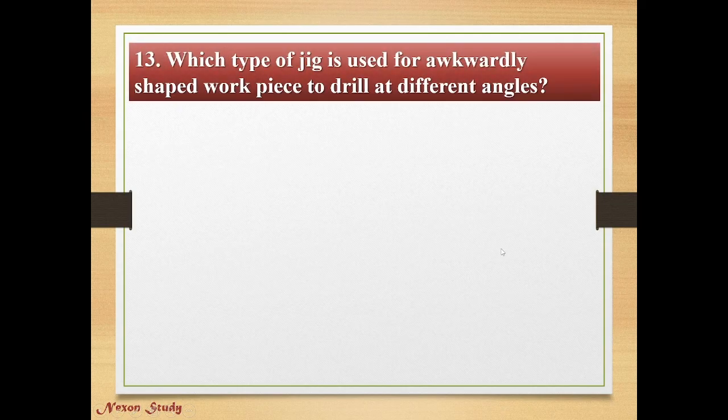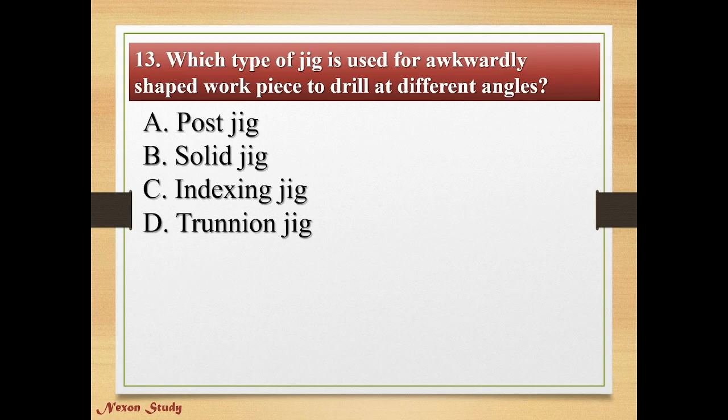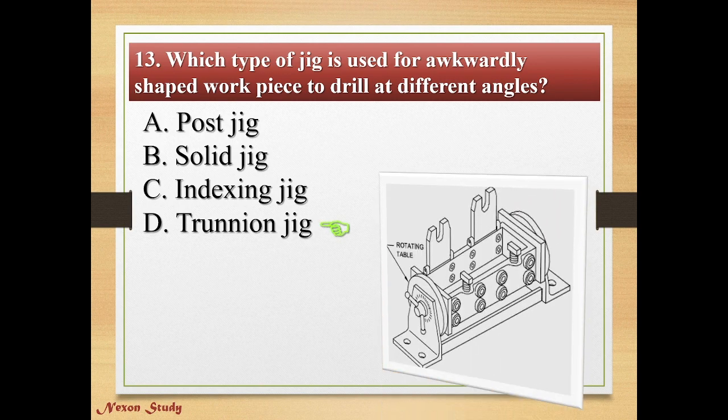Question: Which type of jig is used for awkwardly shaped workpieces to drill at different angles? Options: post jig, solid jig, indexing jig, trunion jig. Correct answer is trunion jig. This is the trunion jig.